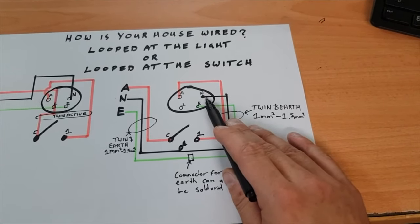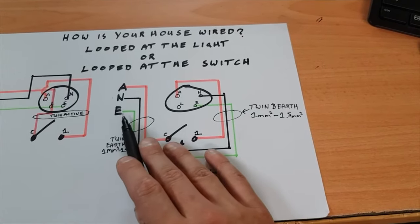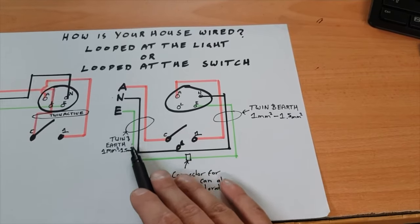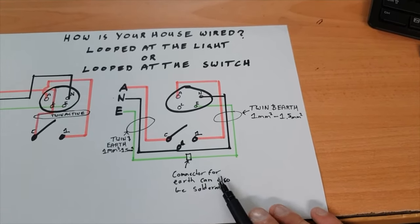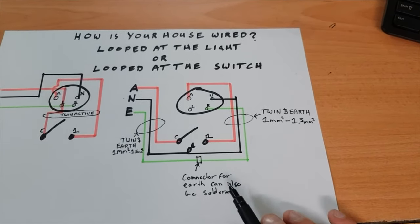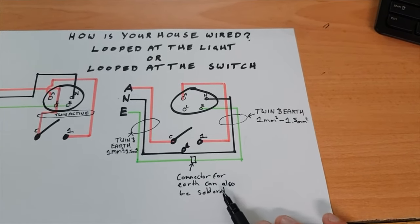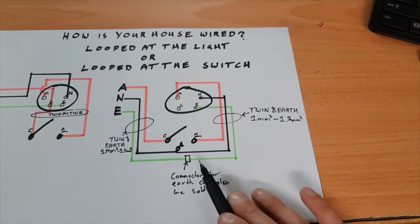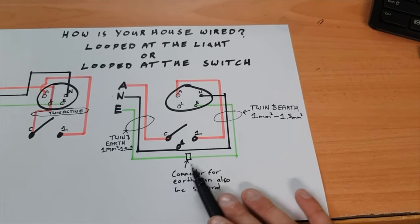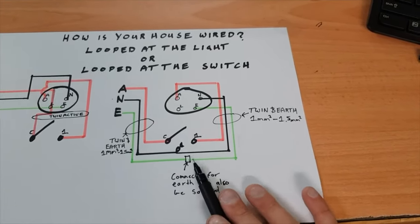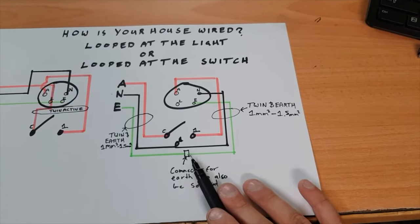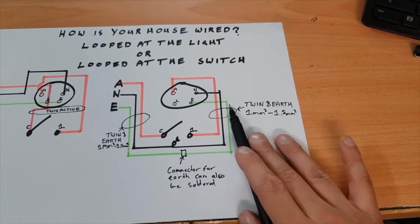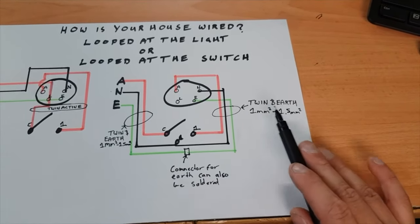Then the earth is similar to the neutral. It goes down into a connector, and the connector is for the earth. It can also be soldered, so if you find the solder behind the switch, don't freak out. You can cut the earths and strip them back and tap into the earth there and put a screwed connector on it, a double screw connector, and then that cable goes straight up to the light.